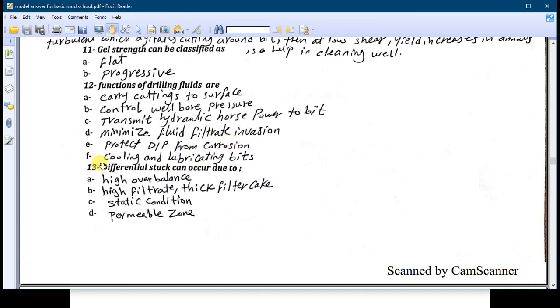Number thirteen, which is very important question: the differential stuck can occur due to many reasons and the four must be on the same time. Number A: high overbalance. Number B: high filtrate and thick filter cake. Number C: static condition or stationary drill string is very important. And number four is the permeable zone.